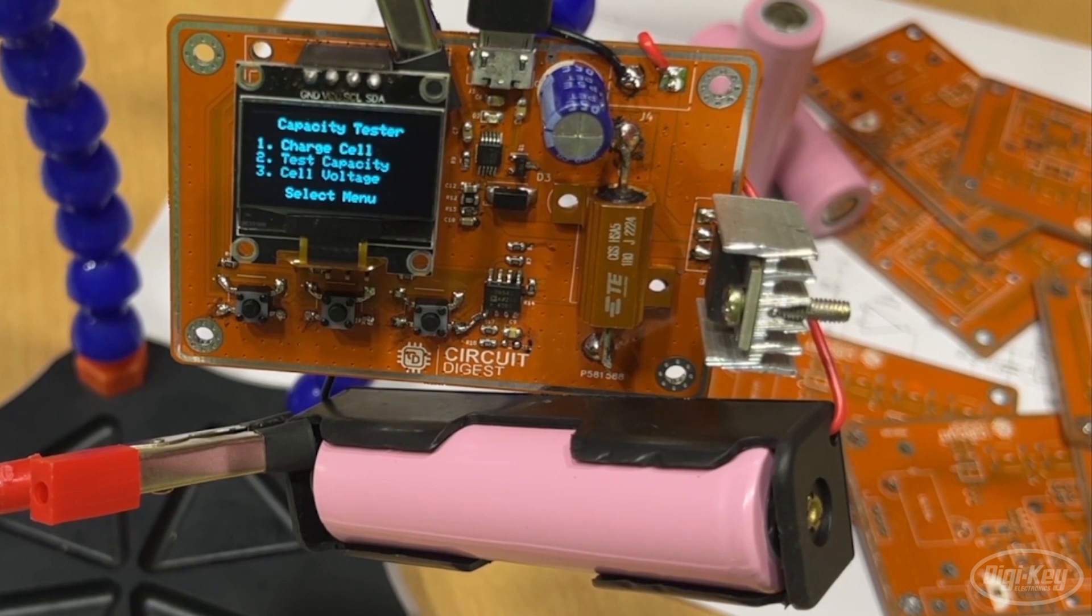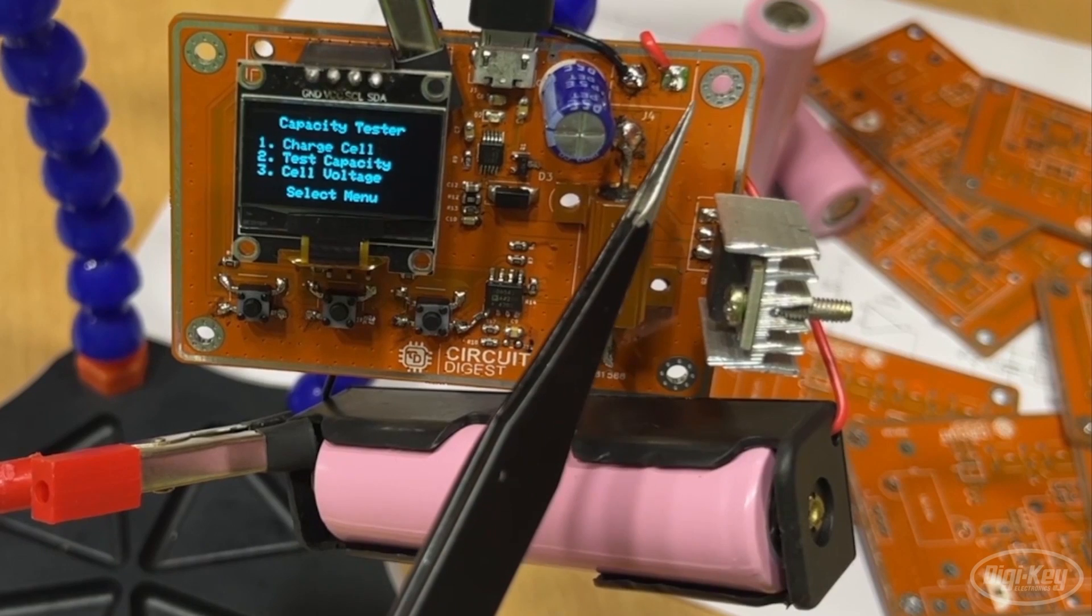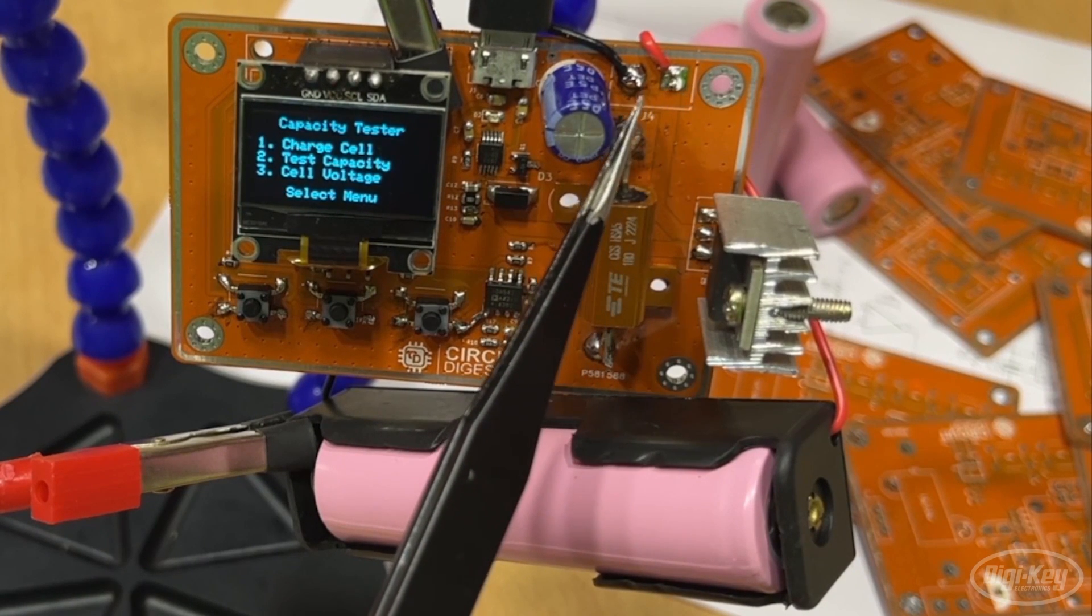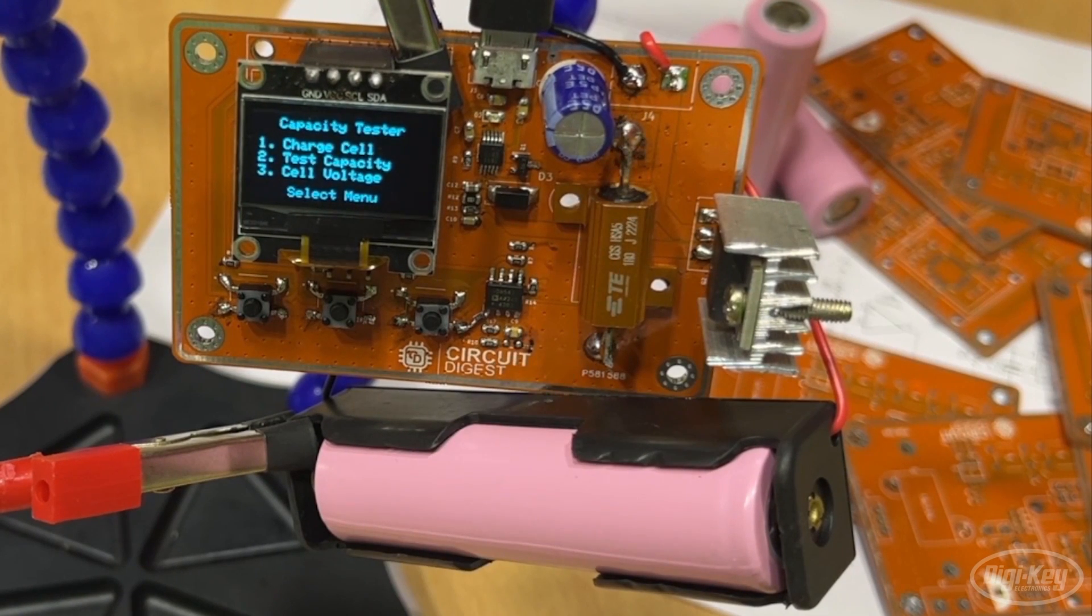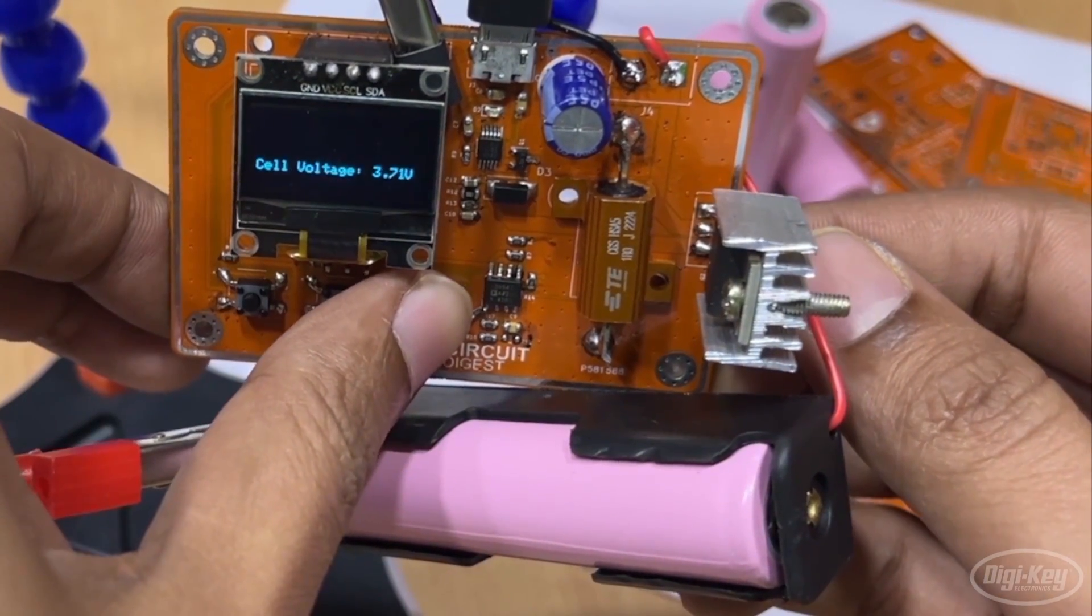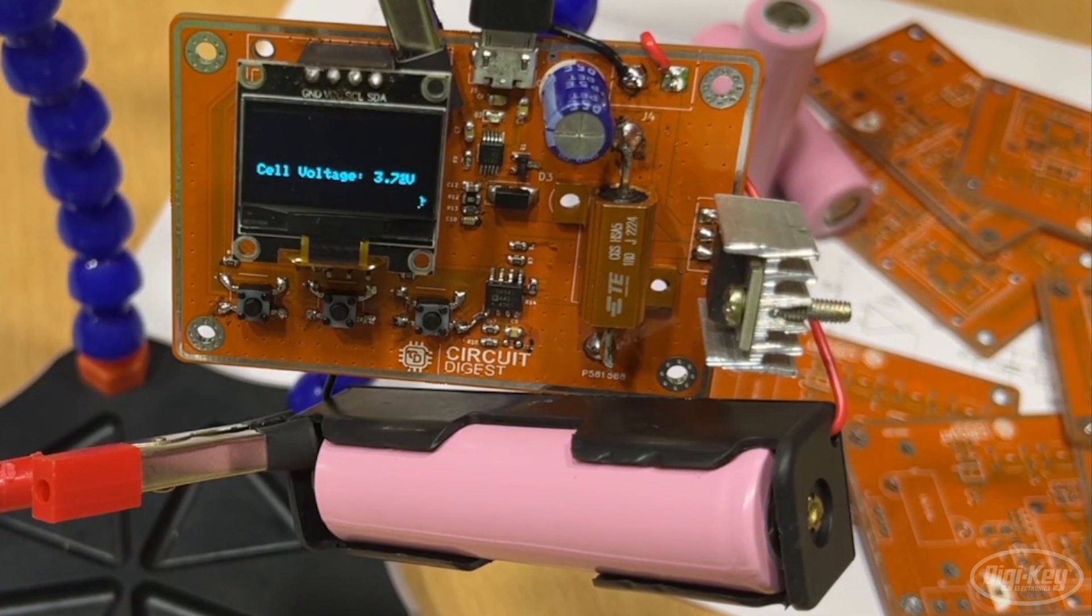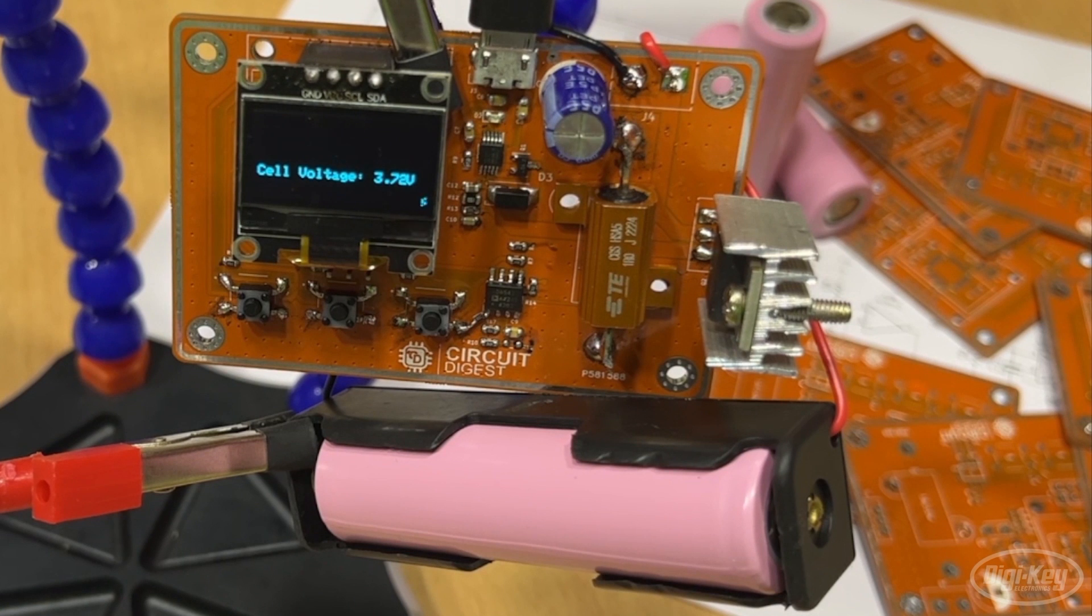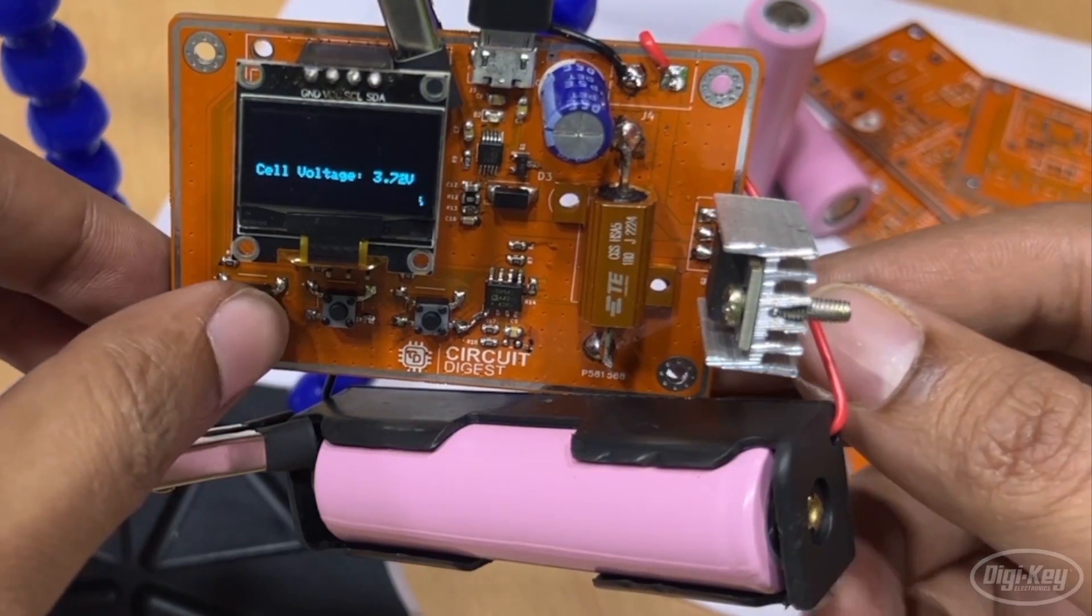Now we have the cell inserted into our 18650 cell holder here and it is connected. The positive of the cell is connected to this pin and the negative of the cell is connected to this pin. Before we do anything let's first check the cell voltage. We can press the third button and you can see that the current cell voltage is around 3.7 volts which is normally the voltage it will be when you receive it from a factory. So what we can do is we can first charge the cell by pressing on the first button.